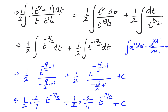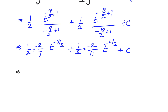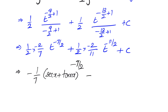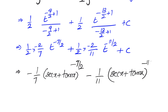In the last step, we substitute back t equals secant x plus tan x. The final answer is minus 1 by 7 times secant x plus tan x whole to the power of minus 7 by 2, minus 1 by 11 times secant x plus tan x whole to the power of minus 11 by 2, plus c.